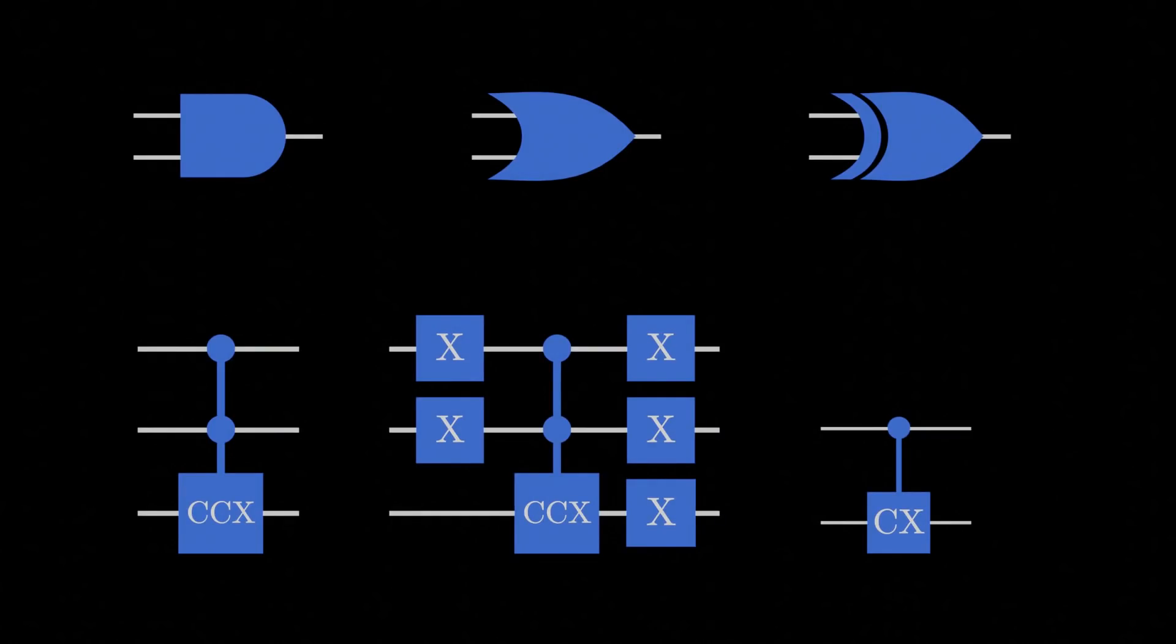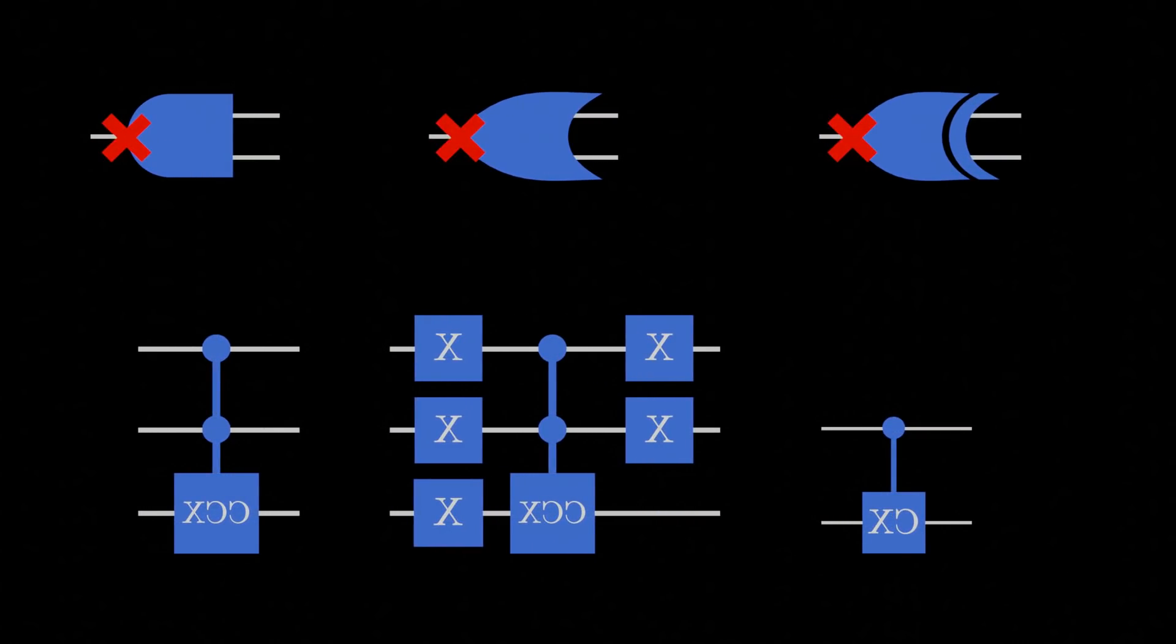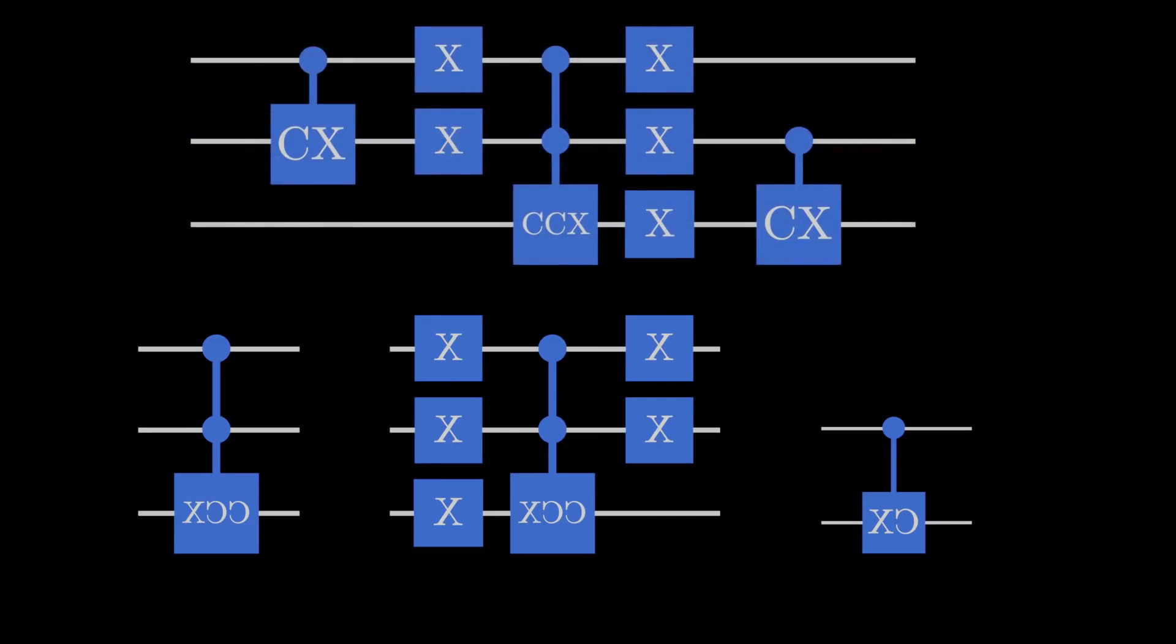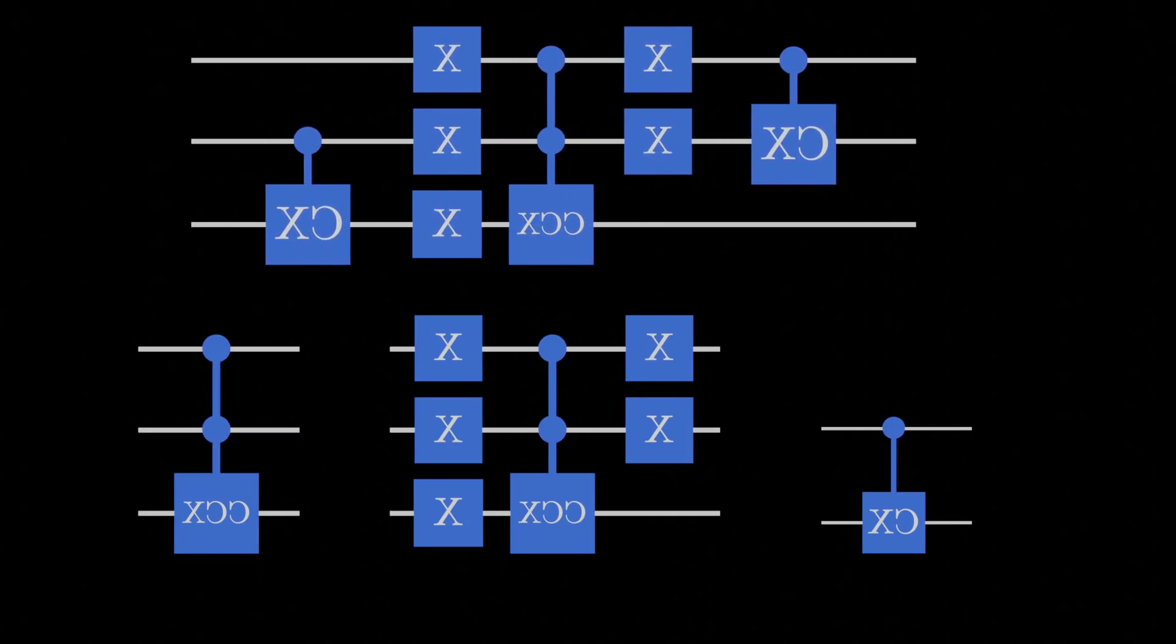Notice that, unlike in classical computing, we keep the inputs of the AND gate. This gives us the unique ability to undo the operation at a later time. This property is true of all quantum logic gates, and by extension it is also true of all circuits made from quantum logic gates. This property will be very important later.